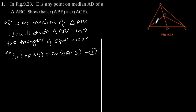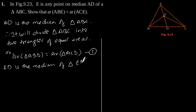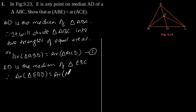Now, from the figure we can see that ED is the median of triangle EBC. Therefore, area of triangle EBD is equal to area of triangle ECD. Let's say this is equation 2.